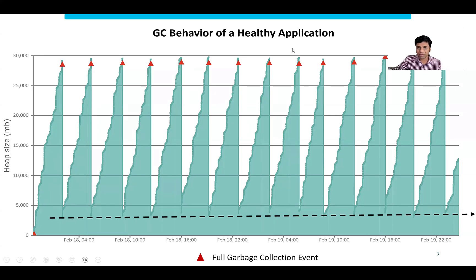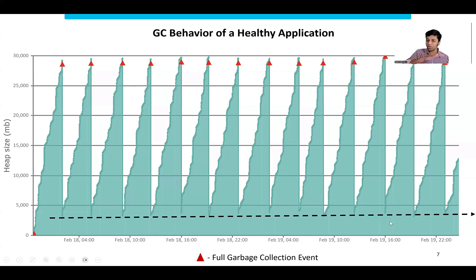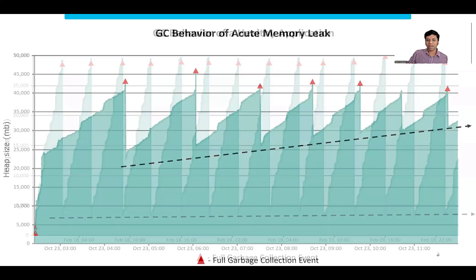This is what the garbage collection behavior of a very healthy application looks like. Requests come in, memory builds up, a full garbage collection event runs and memory drops all the way to the bottom. Then requests come in again, memory builds up, GC runs, memory drops. This beautiful sawtooth pattern — if I draw a line connecting all the bottom points, it goes at nearly zero degrees.